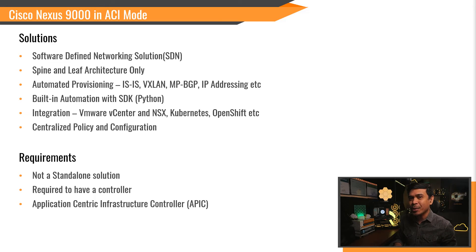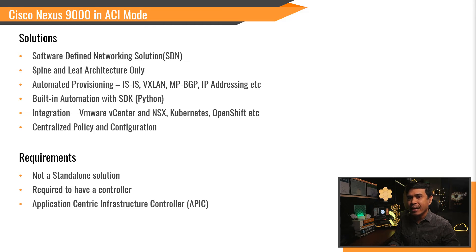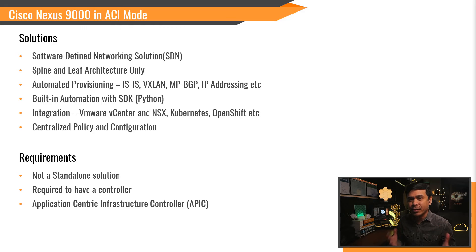ACI mode does automated provisioning — such as IS-IS routing, VXLAN, NPVGP, and even basic IP addressing. So in short, there is no need to manually learn or configure VXLAN, NPVGP, or EVPN, because SDN handles it all automatically. Aside from automated provisioning, it has built-in automation features as well, with an available Python SDK to integrate ACI with third-party platforms.